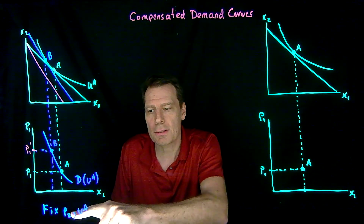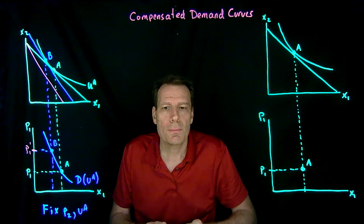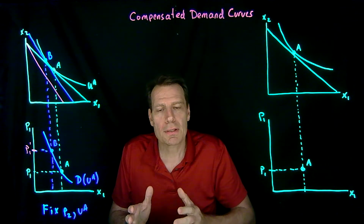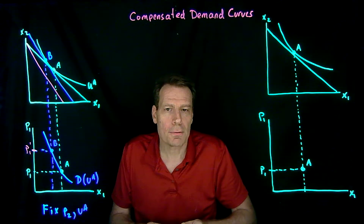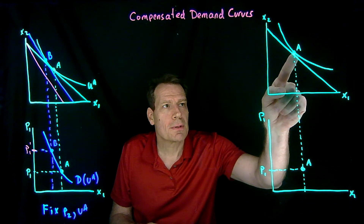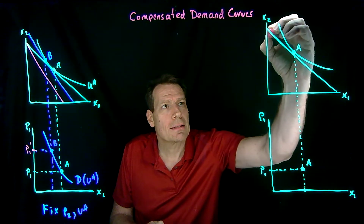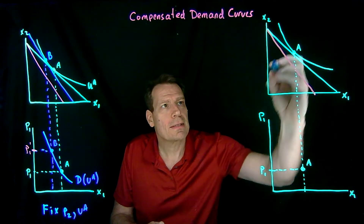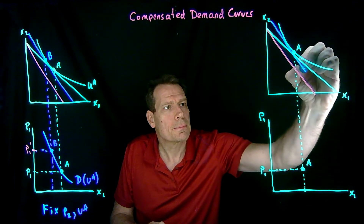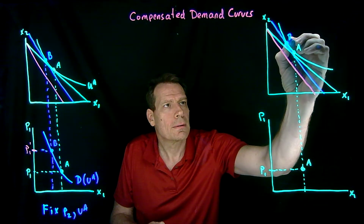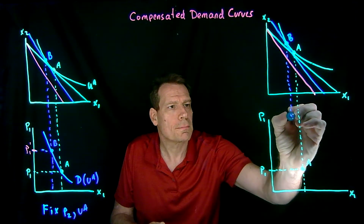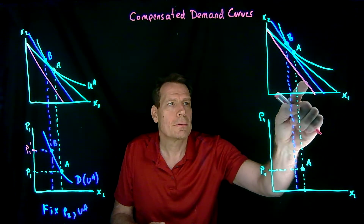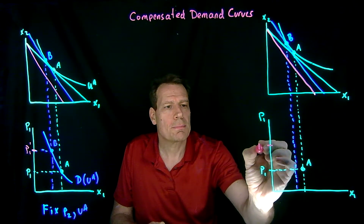On the regular demand curve we hold income and the price of good 2 fixed. We'll show in class some uses for the compensated demand curve, but first let's see how it's generally related to the regular demand curve. Returning to the same starting point, we can again increase the price, find the compensated budget, get point B, and bring that point B down to the lower graph. That point happens at the final higher price, P1 prime.